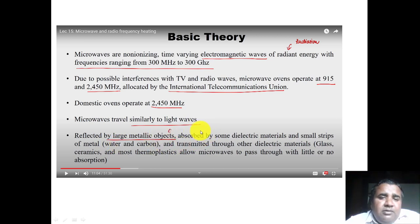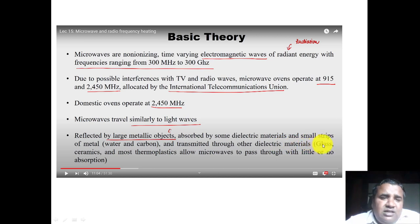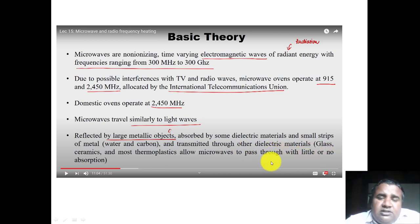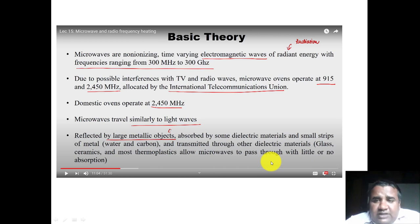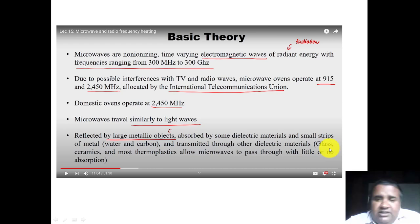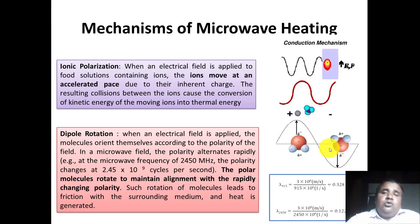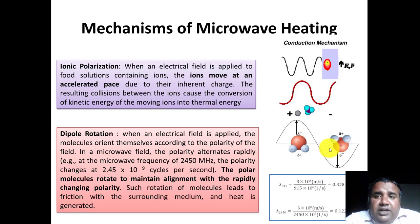Some dielectric materials like water and carbon can absorb microwaves, and food products are also dielectric materials — that is why food products absorb microwaves. Microwaves are transmitted through other dielectric materials like glass, ceramics, and most thermoplastics, which allow microwaves to pass through with little or no absorption. That is why we can heat a product inside a package — whether wrapped in polythene, polyester, or thermoplastics — and why we generally place food inside a glass container before putting it in the microwave oven.